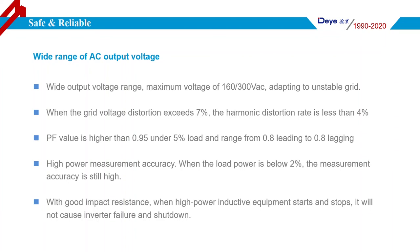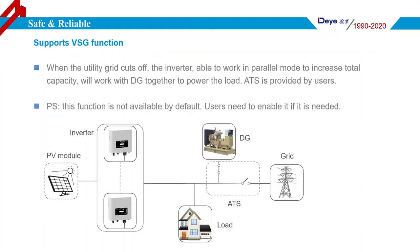This picture shows the system connection of the string inverter and diesel generator. Due to the use of droop control technology, the entire system is very stable.